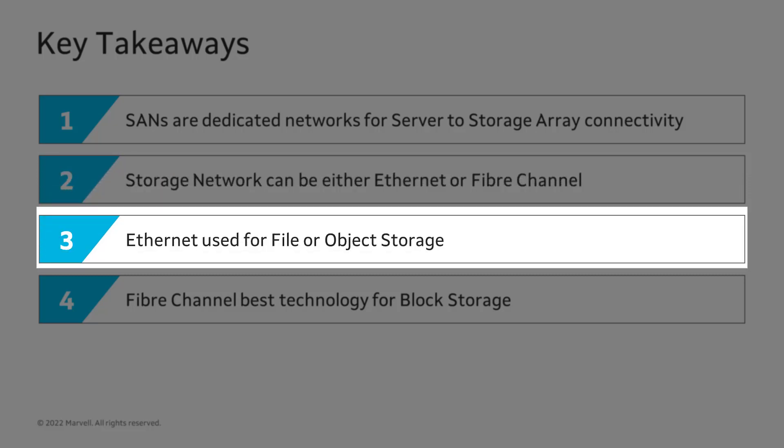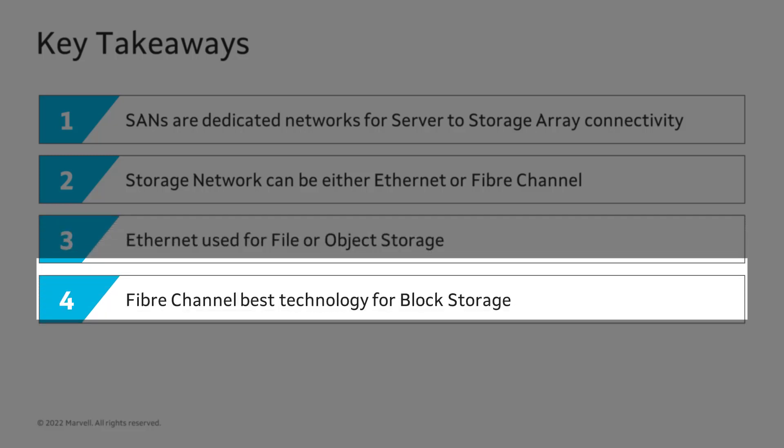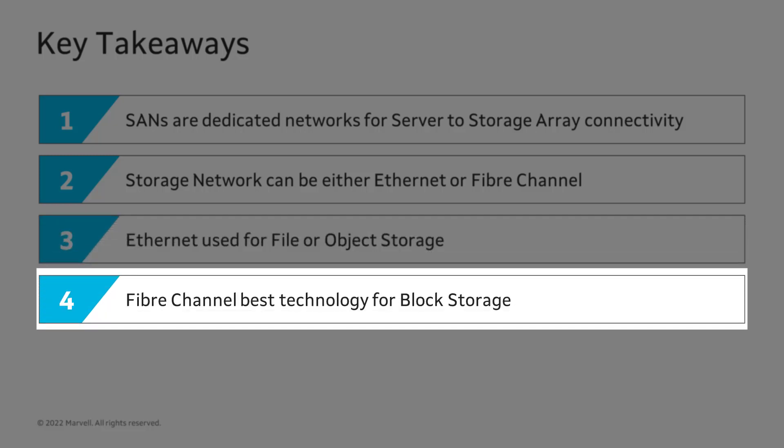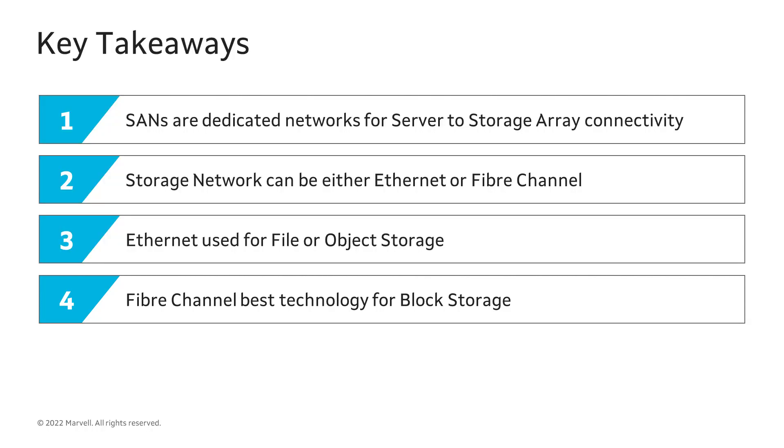Ethernet SANs are best when using file or object storage, or when there is a requirement to mix file, object, and block storage. Fibre Channel SANs are the best solution for block storage applications, as Fibre Channel delivers more consistent SAN performance at scale, improves CPU efficiency, and is much more secure than Ethernet networks.